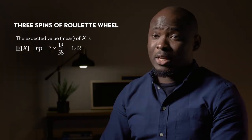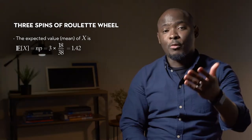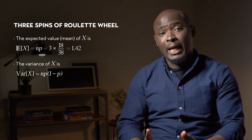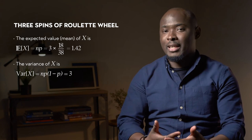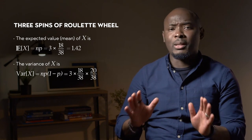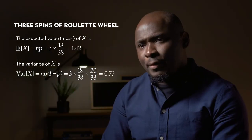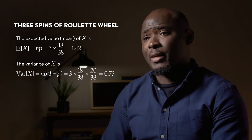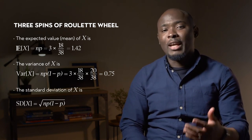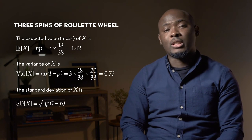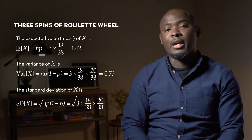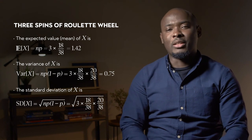We can do the same for variance and standard deviation. Our variance is n times p times (1 minus p), where n is 3, p is 18 over 38, and (1 minus p) is 20 over 38, which gives us approximately 0.75. The standard deviation, using the binomial formula directly, is the square root of n times p times (1 minus p): the square root of 3 times 18/38 times 20/38, which gives us approximately 0.86.